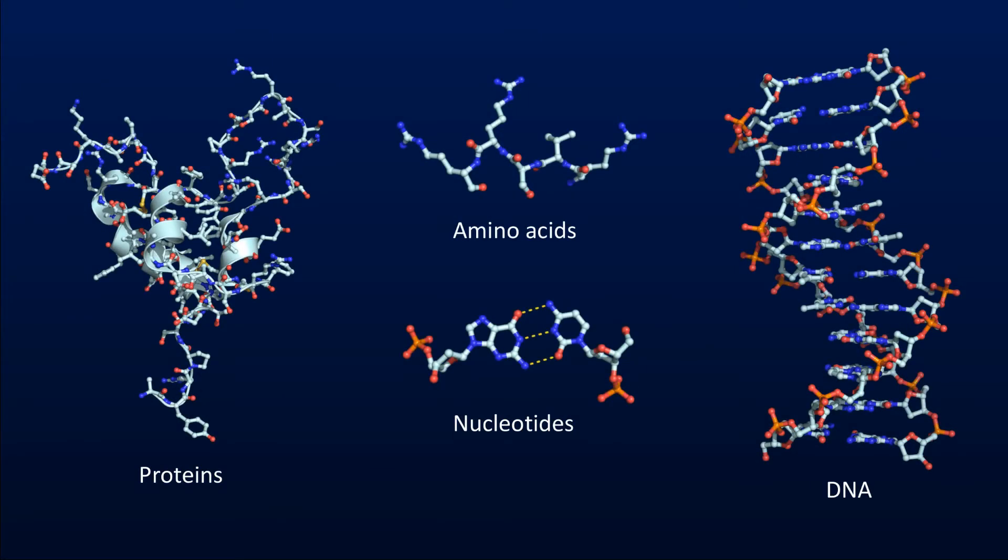Nitrogen is one of the most important elements for life on Earth. It is a key component of proteins where it forms strong peptide bonds that link together amino acids into a long, stable chain.